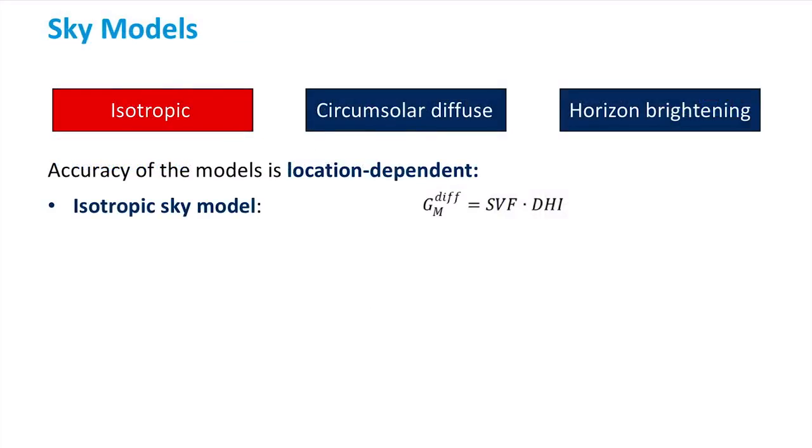The simplest one is the isotropic sky model. The isotropic sky model assumes that the diffuse radiation is uniform across the sky and is only a function of the sky view factor and the direct horizontal irradiance.